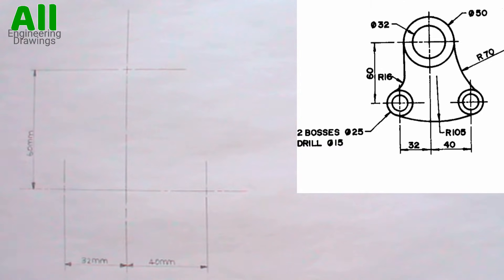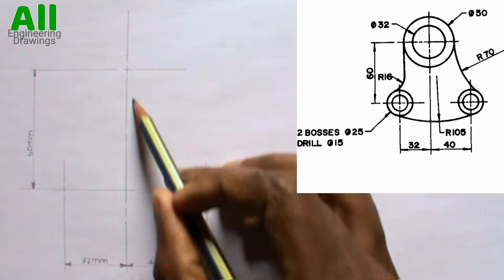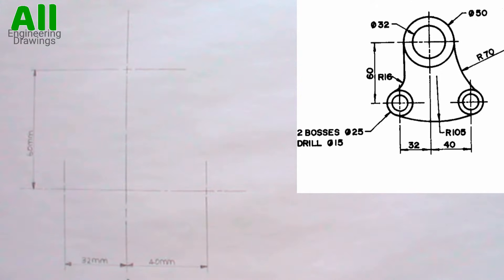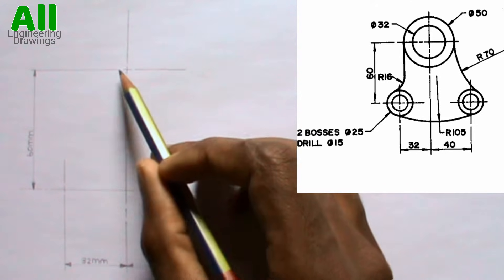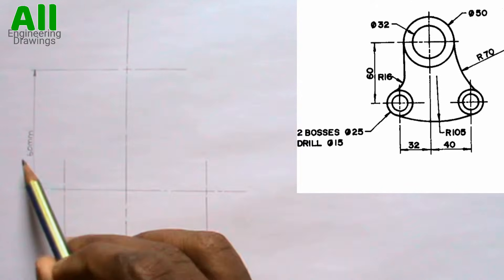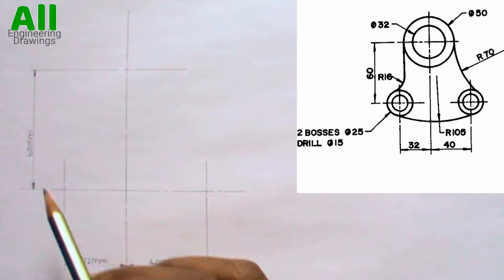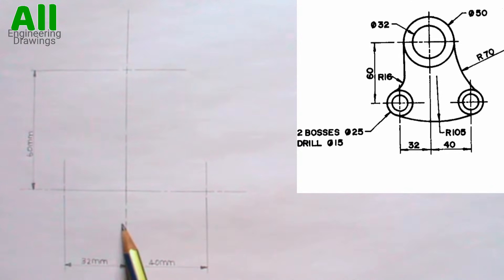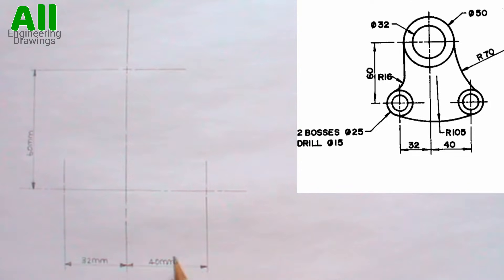To draw the solution of the above tangency problem, first you have to draw the layout. It is easier to start with the center line. The distance between this line and this line is 60mm, the distance between this line and this line is 32mm, and the distance between this line and this line is 40mm.